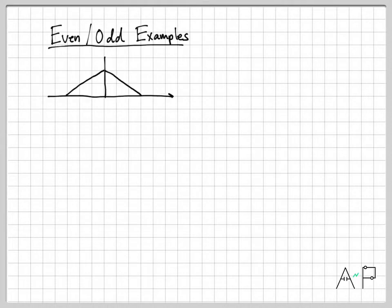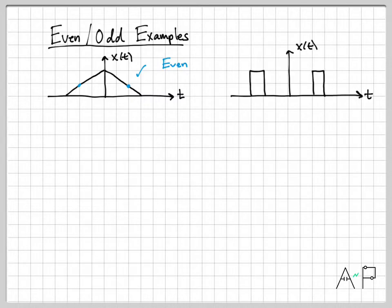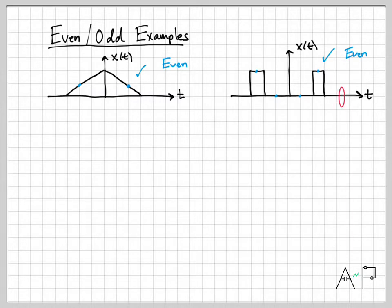Let's do some even examples. Here is a signal x(t). If I pick a time, it has some amplitude value, and if I go to the corresponding negative time, those blue dots are at the exact same amplitude — and that happens no matter what time I choose. So this is indeed an even signal. For the second example, picking some time t, the corresponding negative time gives the same value: 0 equals 0, and at another chosen time, the corresponding negative time gives the exact same amplitude. So this is also an even signal.